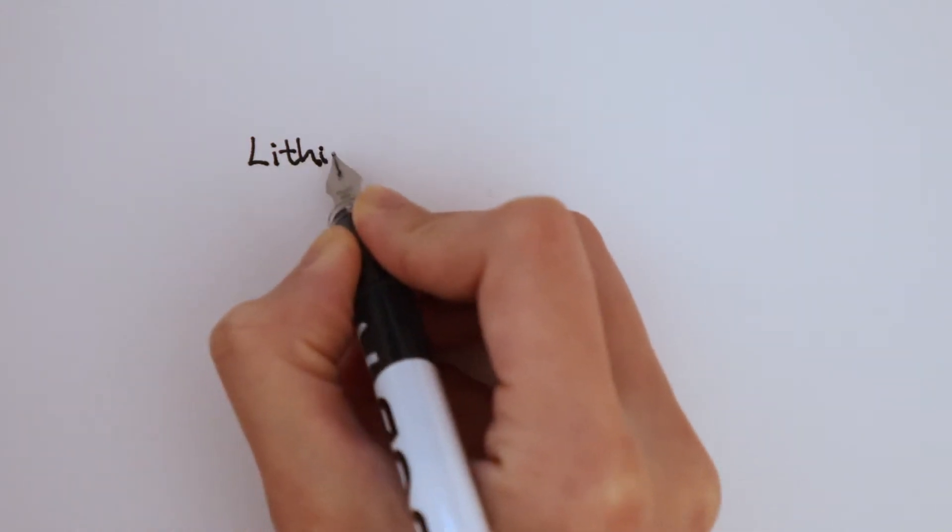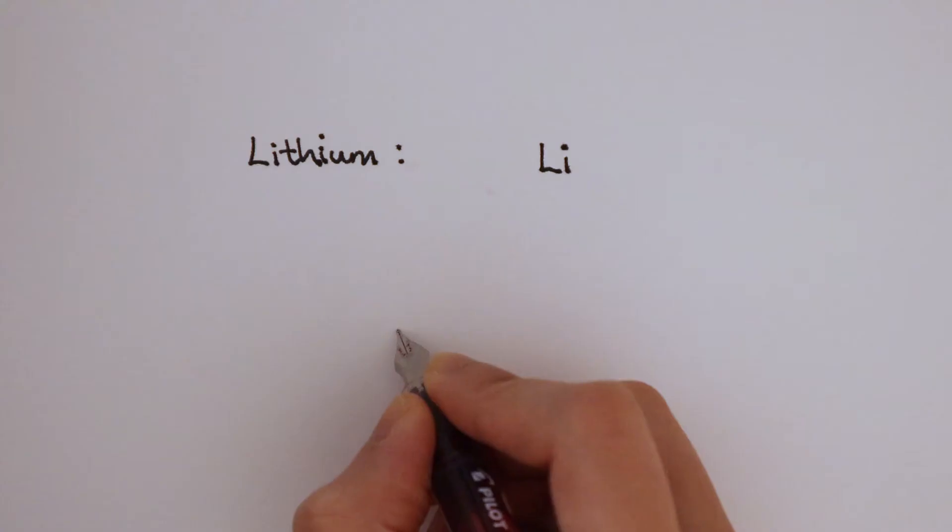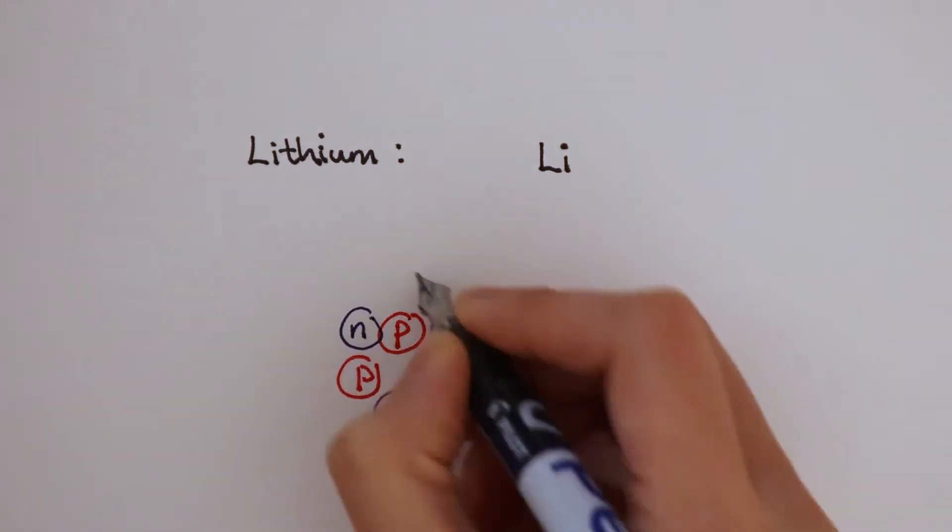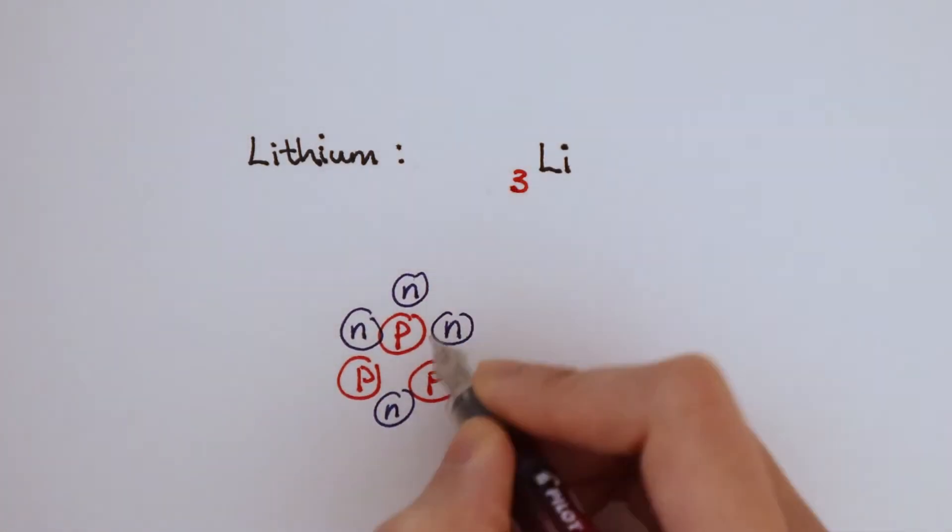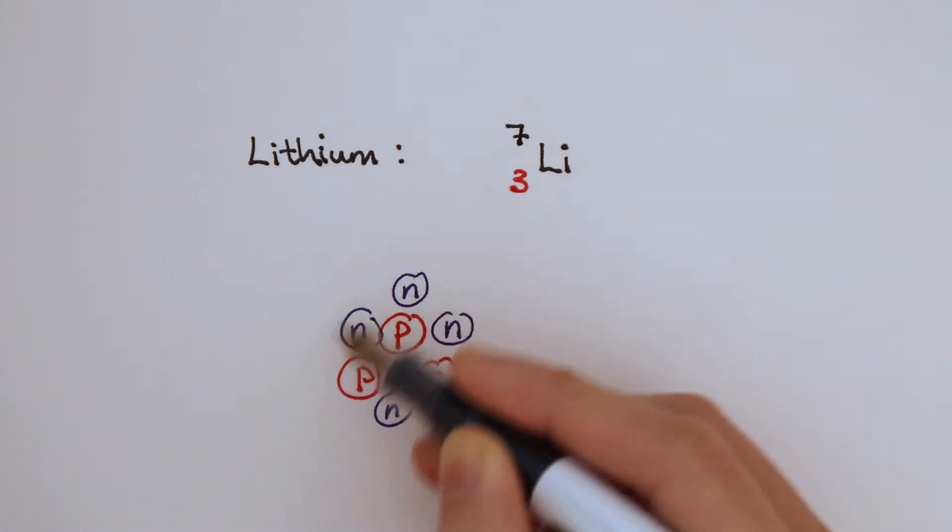For example, lithium has the symbol Li. It has 3 protons and 4 neutrons in the nucleus. 3 represents the number of protons. 7 represents the number of protons plus the number of neutrons.